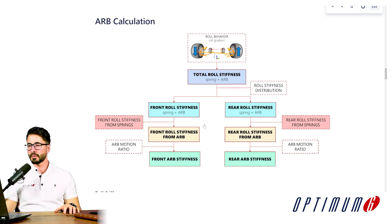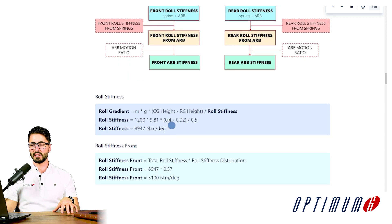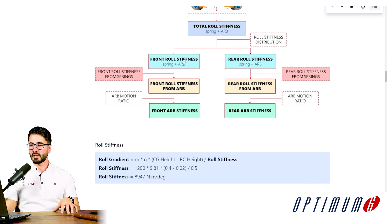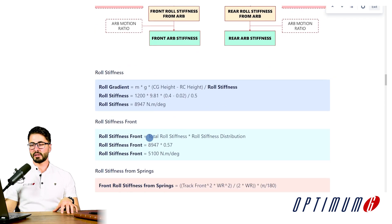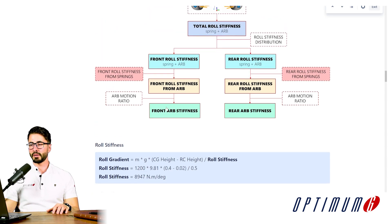Now let's look at the calculations. First step: we go from roll behavior to total roll stiffness using the roll gradient equation, isolating roll stiffness to calculate the value needed to achieve the target roll gradient. Next step, in light green: we have front roll stiffness, calculated as the total roll stiffness multiplied by the roll stiffness distribution of 57%.